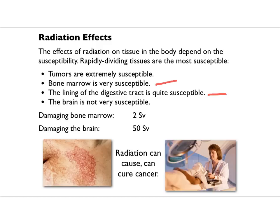Your brain is not very susceptible because there's not a lot of cell division there — you're not having a lot of growth in the number of neurons. Damaging bone marrow takes two sieverts; damaging the brain takes 50 sieverts — that's just because there's a lot less cell division.